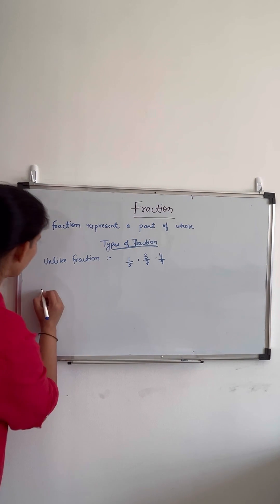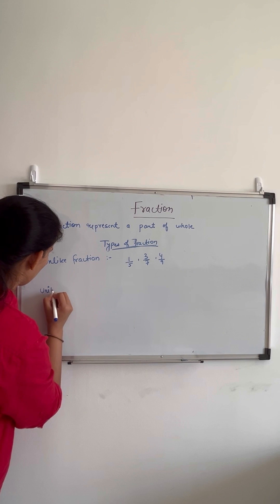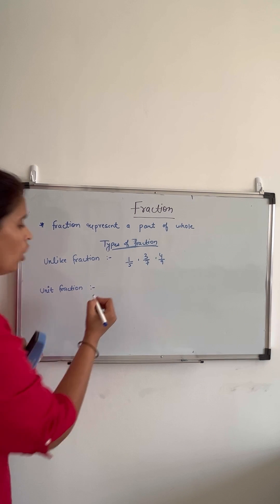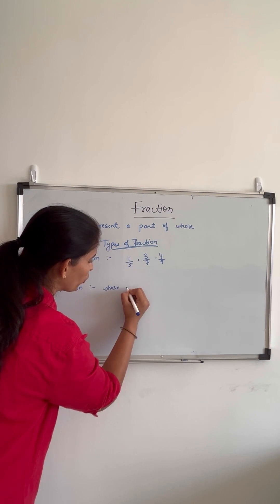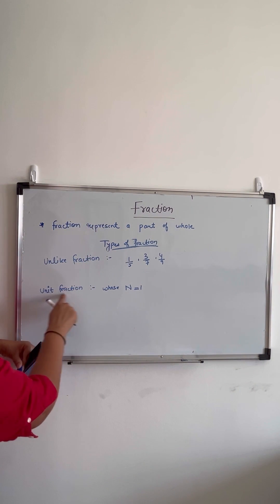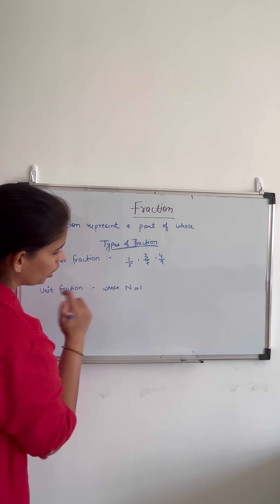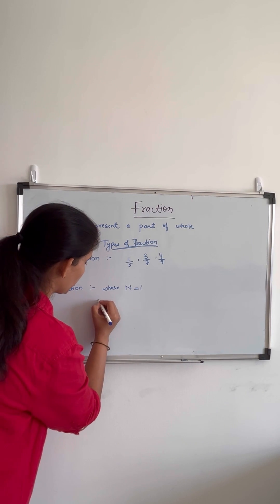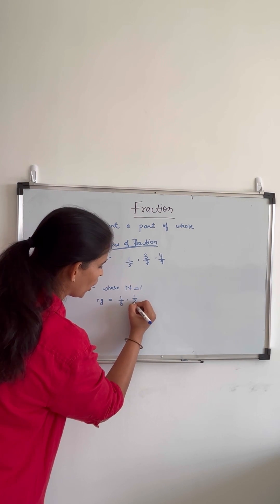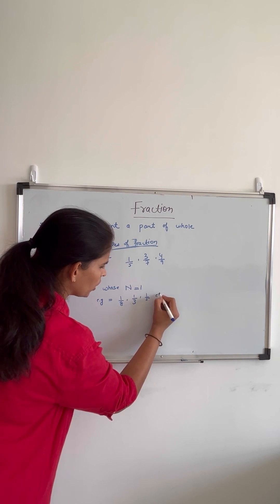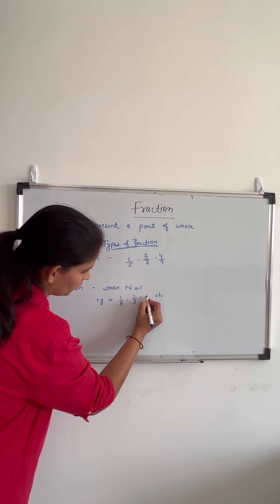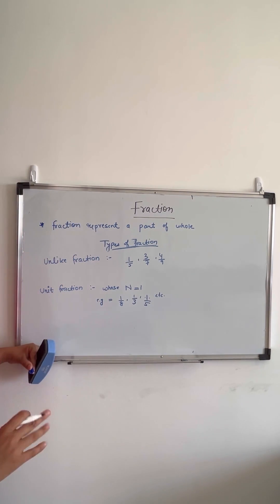There is one more type called unit fraction. Unit fractions are those fractions whose numerator is equal to 1. For example, 1 by 8, 1 by 3, and 1 by 5 — these types of fractions are called unit fractions. So, unit means the number 1 should be the numerator.